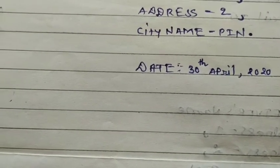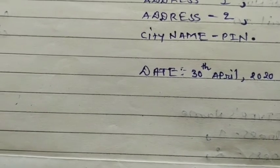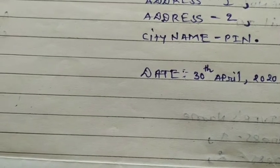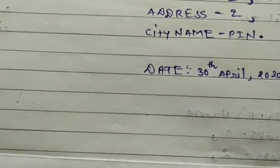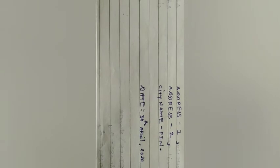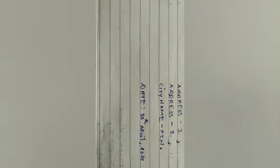Then you have to write the date — you can skip one line as shown in this video. The date is written like this: 30th April, 2020. Never write it as 30-4-2020; you have to write it in the format 30th April, comma, and then the year.